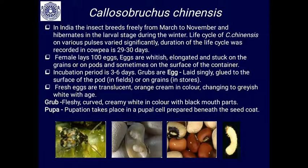The life cycle duration on cowpea is 29 to 30 days and may vary on other pulses. The female lays about 100 eggs. The whitish eggs are elongated and stuck onto the grain surface, or sometimes onto the surface of the container. The incubation period is three to six days.